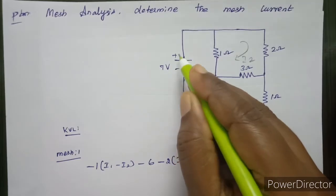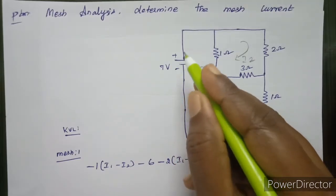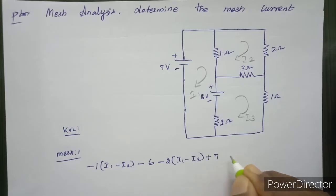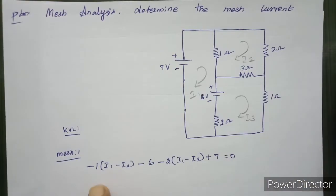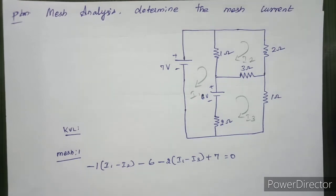The voltage source here is minus on one side and plus on the other, so it is a voltage rise — plus 7. Set the sum of all voltage drops and voltage rises equal to zero. This gives us the first mesh equation.